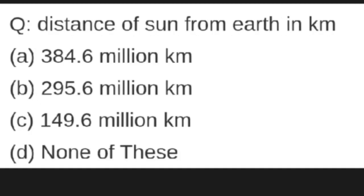Distance of sun from earth in kilometers: Options are A: 384.6 million kilometers, B: 295.6 million kilometers, C: 149.6 million kilometers, D: none of these. Correct answer is A.